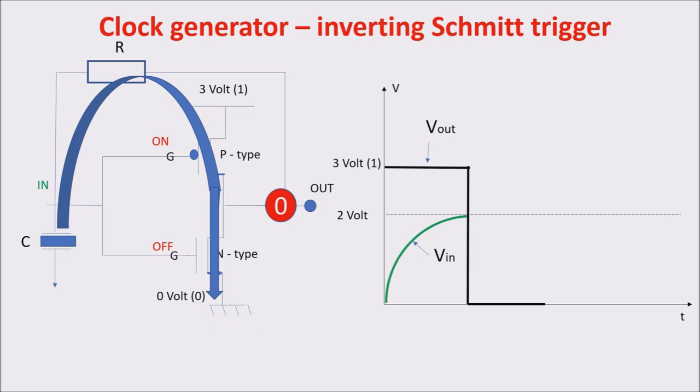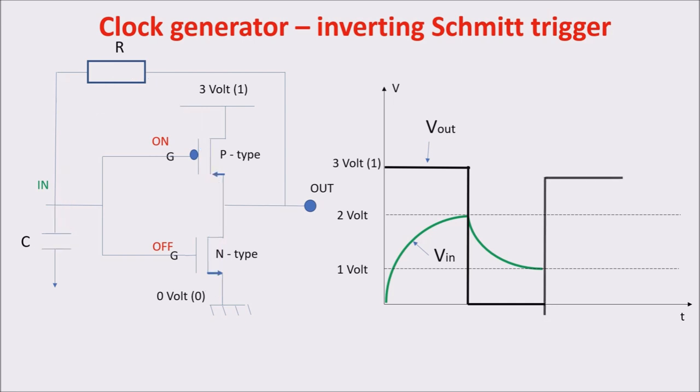The discharging capacitor lowers the input voltage until it reaches the threshold voltage of the P-type transistor. 1 volt in this example, turning ON and connecting the output with 3 volts.